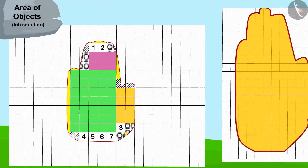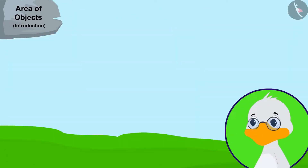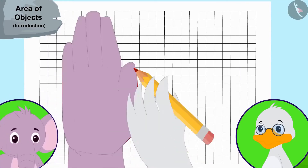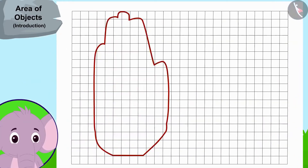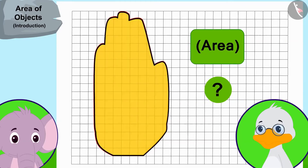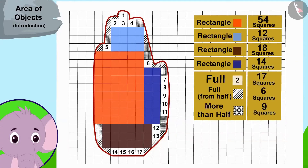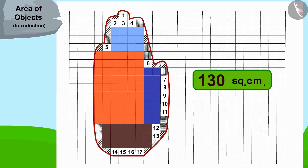But this is not the same as the hand impression on the door. So uncle continued his search and traced Appu's hand. Children, the impression of Appu's hand is shown here. Can you find the area of Appu's hand by the process used by uncle? If you wish to, you may find it by stopping the video. You can also find the area of Appu's hand impression by making rectangles. The area of Appu's hand impression is one hundred and thirty square centimeters.